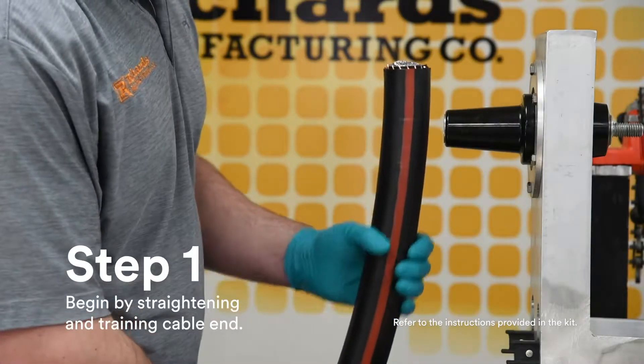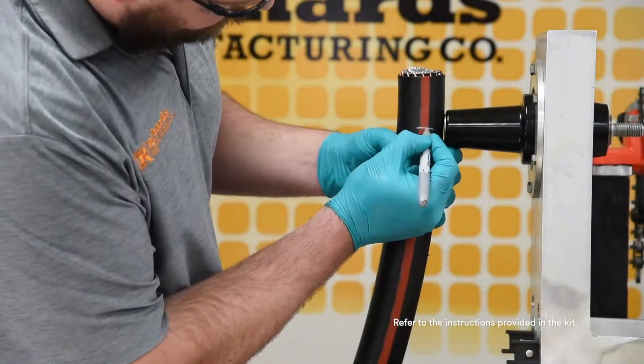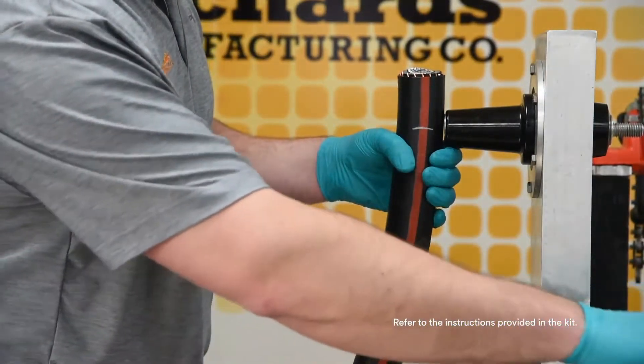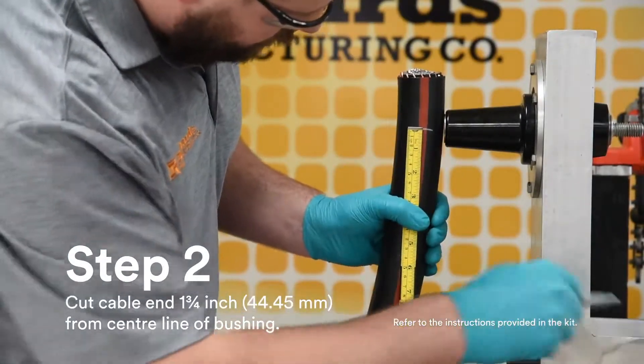Begin by straightening and training cable end. Cable should be free to move approximately two inches in either direction. Cut cable end an inch and three quarters from centerline of bushing.